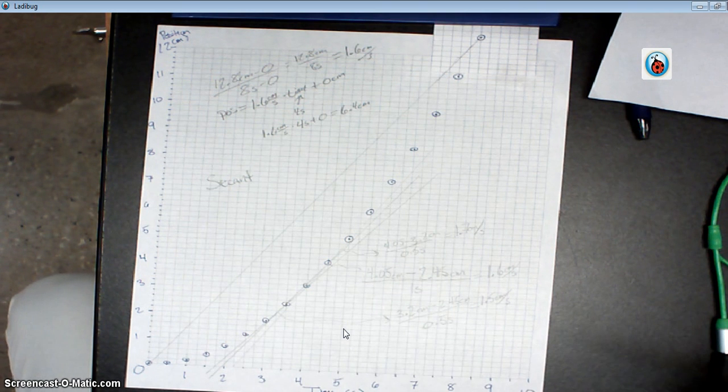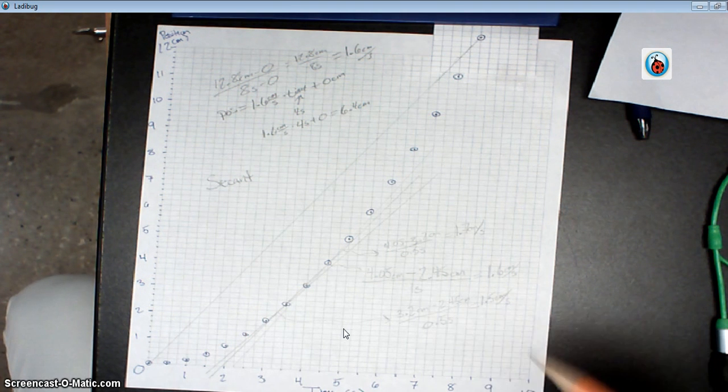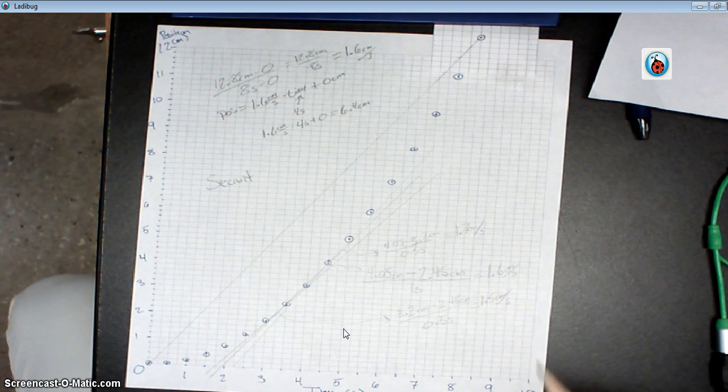So go ahead and find velocities for seven other points on your graph if you can. You might only be able to find six. And then what you'll need to do is plot velocity versus time for those data points that you have the velocity values for. So now you have data to create a velocity versus time graph.